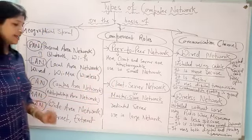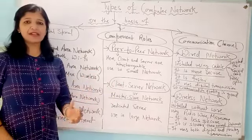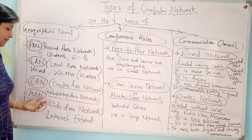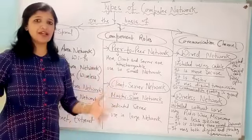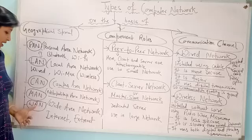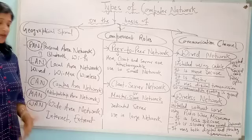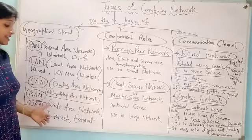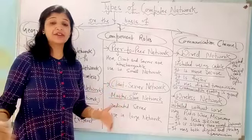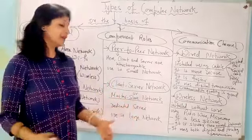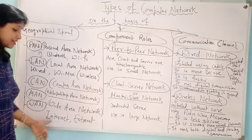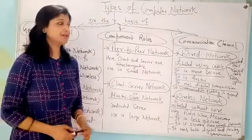Next is campus area network, which is confined to a single campus. Metropolitan area network is confined to within a city. The last one is wide area network, which can expand within a city, within a country, within a continent, or it can be global — for example, the internet or extranet.